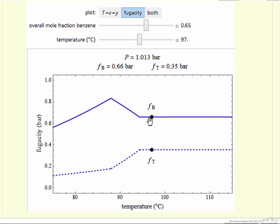Eventually we get to the vapor phase region. In the vapor phase, since we are assuming ideal gas, the fugacity is just the mole fraction, 0.65 times the total pressure of one bar.